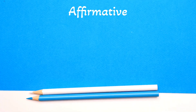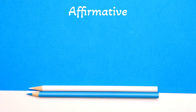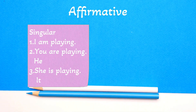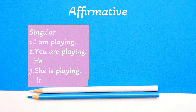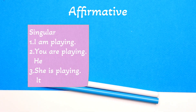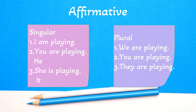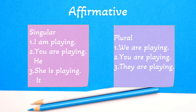Here are some examples of the affirmative form in singular and plural: I am playing, you are playing, he is playing, she is playing, it is playing, we are playing, you are playing, they are playing.